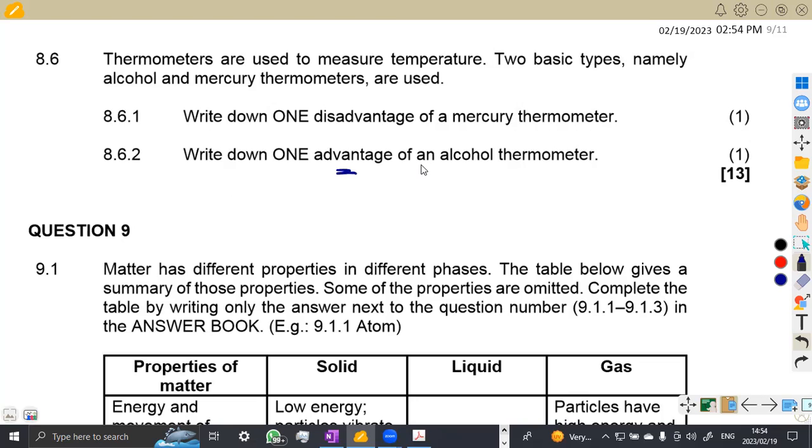8.6.2, write down one advantage of an alcohol thermometer. If you're dealing with alcohol thermometer, it is not easily visible, it adheres to the glass, and does not expand uniformly. We can take one of your choice because that's what we have. Any other part that you have, please let's see that on the comment section so that others can take from them.